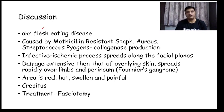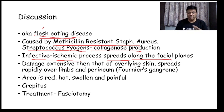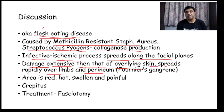Necrotizing fasciitis is also called flesh-eating disease. It is a dreaded complication caused by Methicillin-resistant Staphylococcus aureus and Streptococcus pyogenes, among other organisms. Streptococci produce collagenase, leading to an infective ischemic process that spreads along the fascial planes beneath the skin. The damage is more extensive than visible on the overlying skin. It spreads rapidly over the limbs and perineum — in the perineum it is called Fournier's gangrene. The area is red, hot, swollen, and painful, and crepitus may be present.